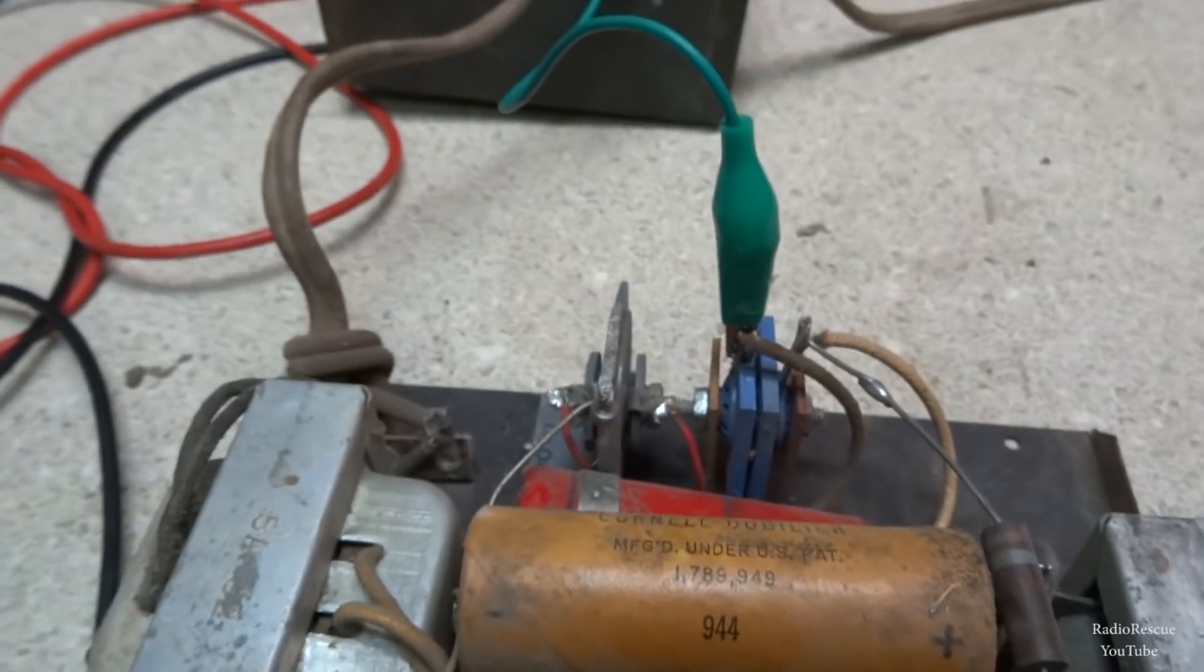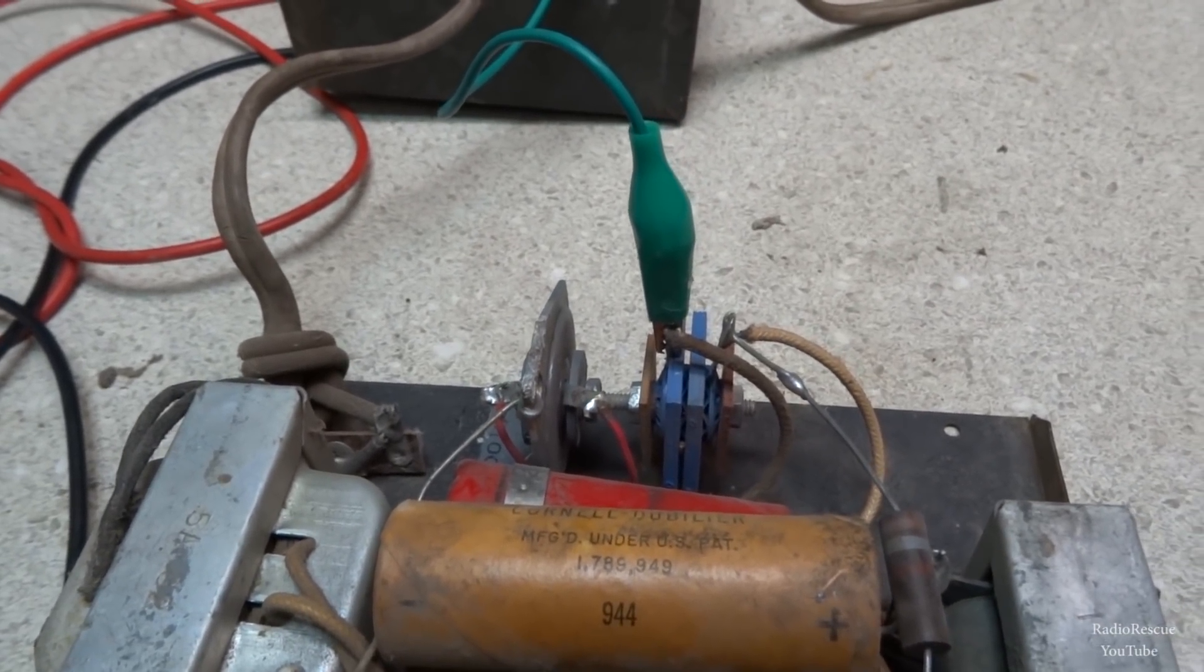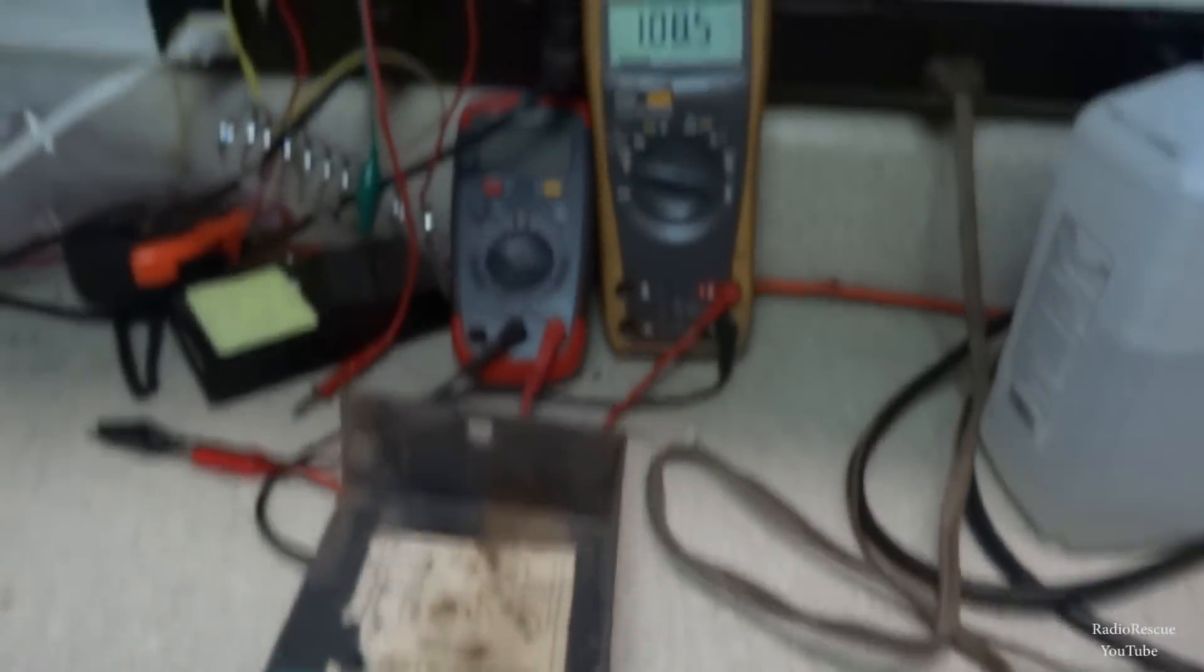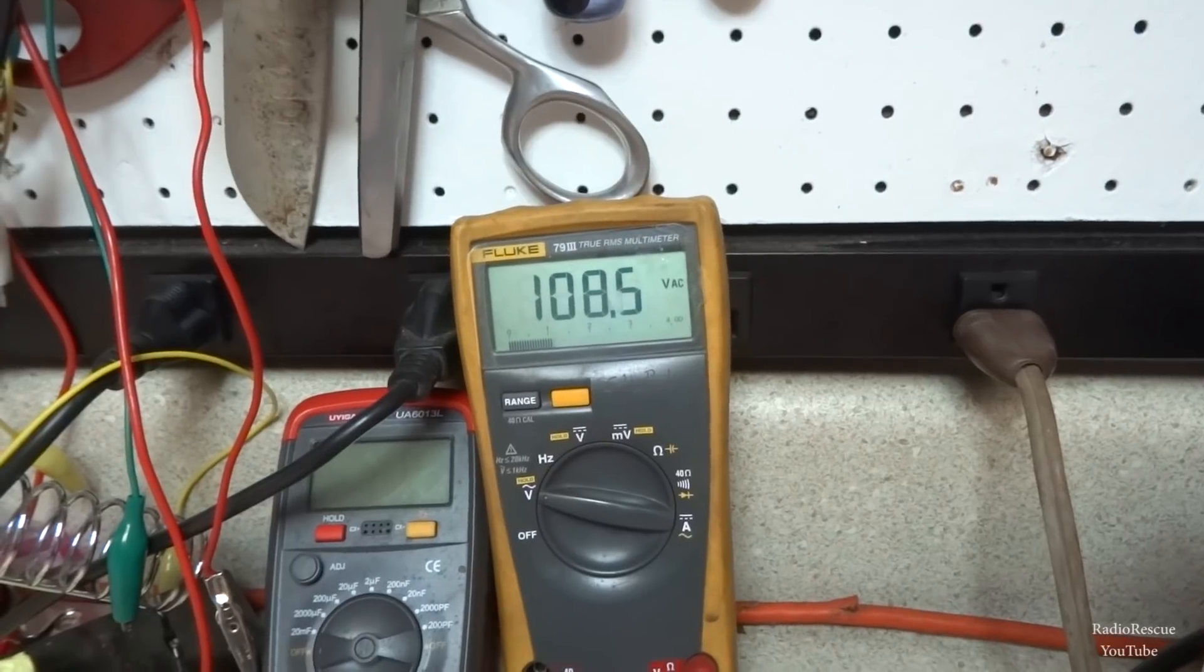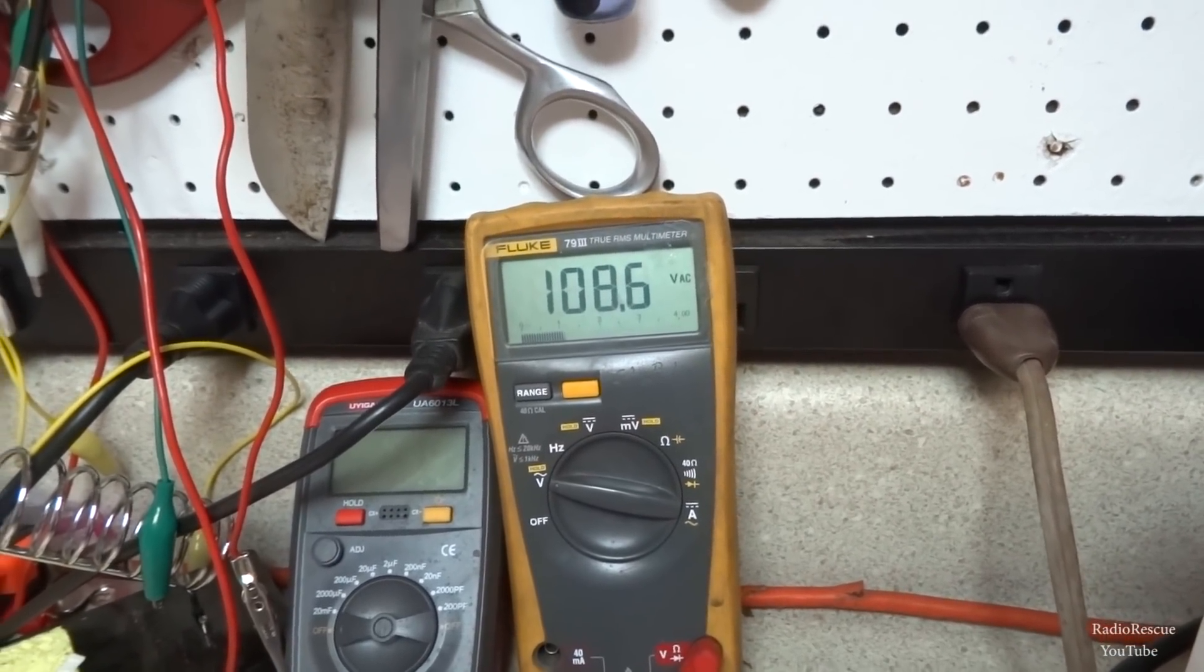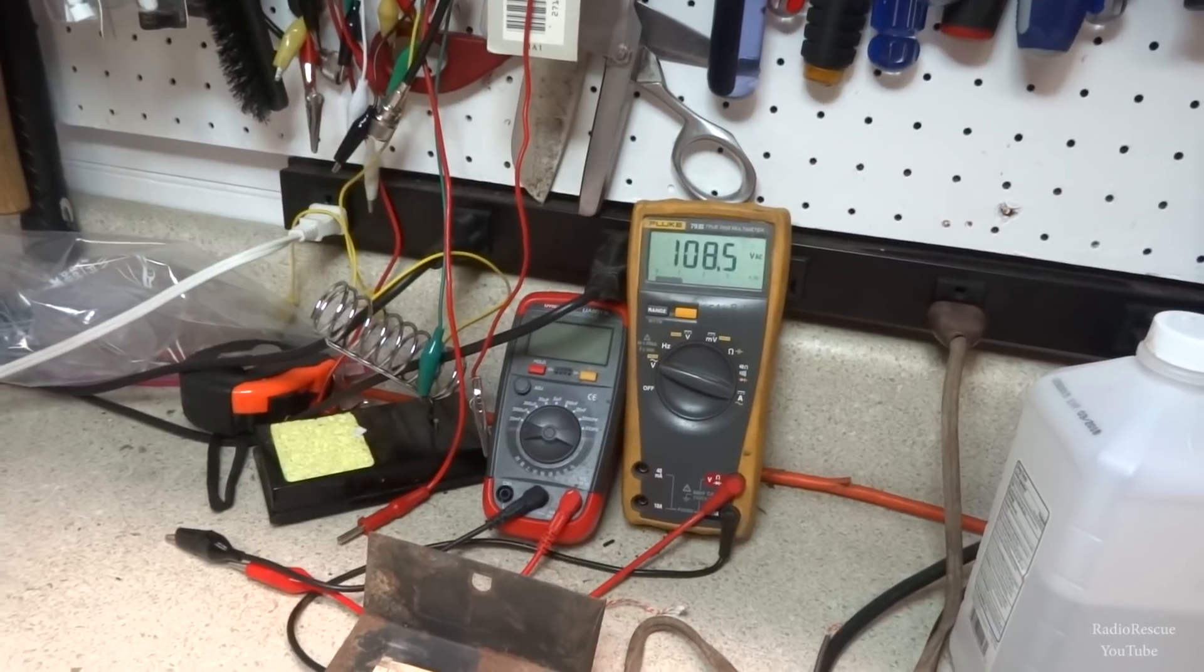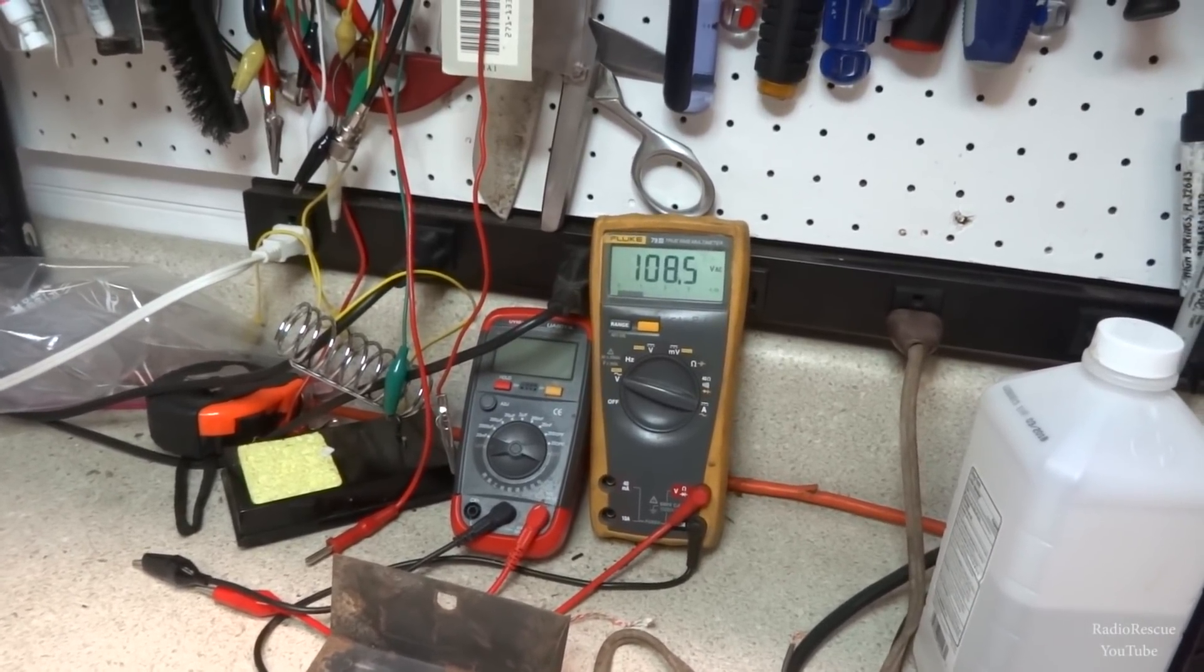Measuring the input voltage to the selenium rectifier, we've got our B negative there, and on the input of that selenium rectifier I'm getting 108 volts. The schematic says 100 volts, but that's probably because modern wall outlets are more like 120 instead of 110. Getting good input voltage, just not very good output.